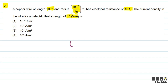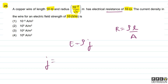So here we need to use the formula E = ρJ, where E is electric field strength, ρ is resistivity, and J is current density. We also have electrical resistance given, and R = ρL/A. So from this, J = E/ρ. Now substituting the value of ρ, we get J = E divided by (RA/L), which becomes J = EL/(RA). Electric field E is known, length L is given, resistance R is known, and we can find area A since radius is given.